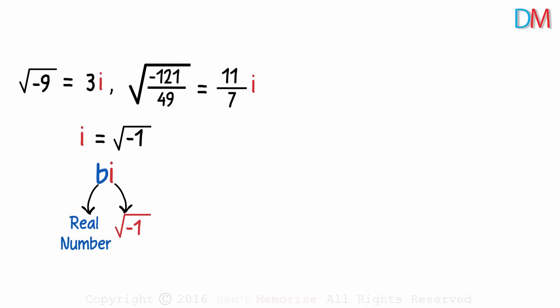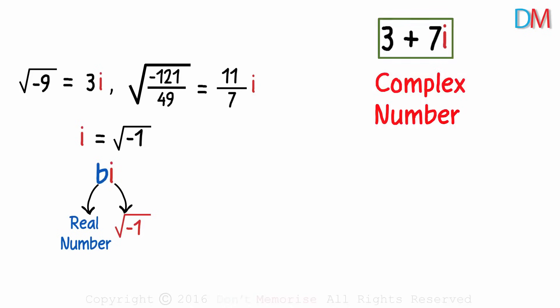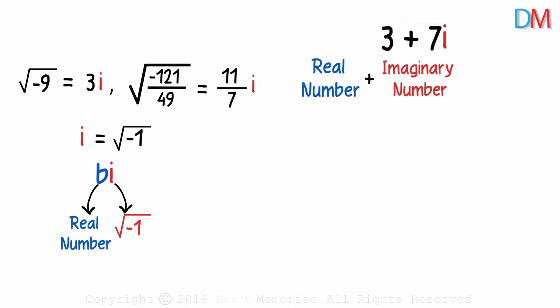What if we have a number like 3 plus 7i? Will this be an imaginary number? Well, we can be sure that this part of the number is imaginary, and this part is a real number. So this is a mix of real and imaginary parts, and this is what we call an example of a complex number. Real plus imaginary gives us a complex number.